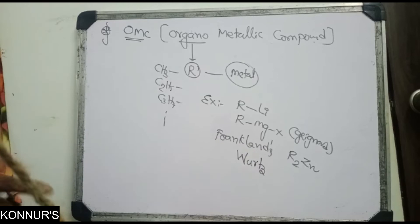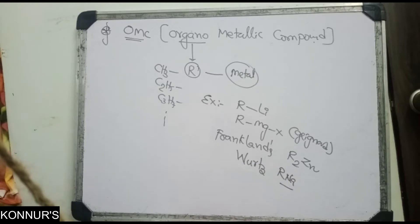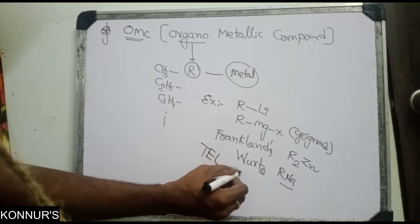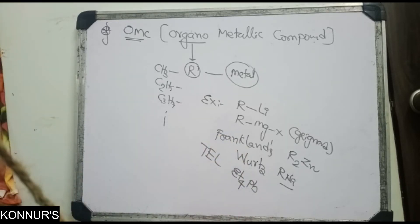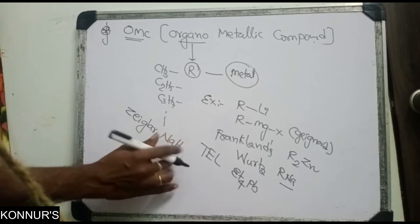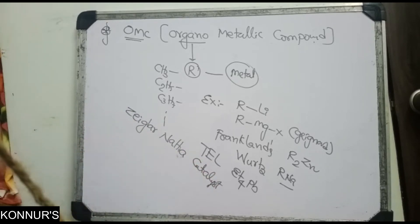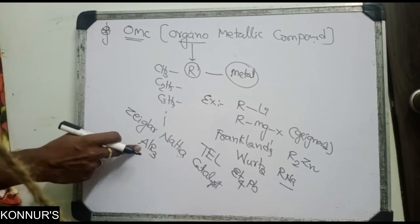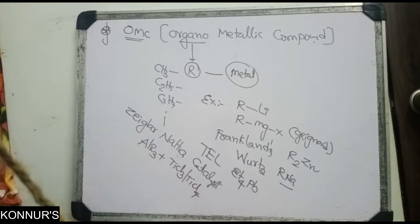Wurtz reagent (RNA) uses sodium as the metal. Tetraethyl lead (Et4Pb) has ethyl groups directly connected with lead. The very famous Ziegler-Natta catalyst is also organometallic — it consists of ALR3 (aluminum alkyl, an organometallic compound) combined with TiCl3 or TiCl4.